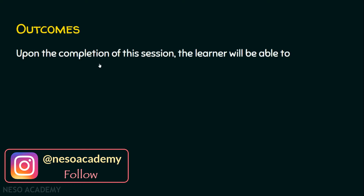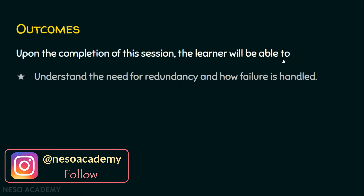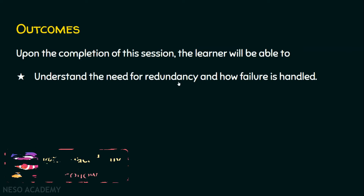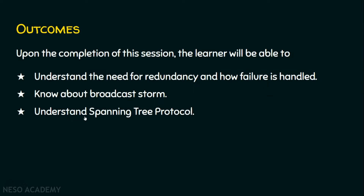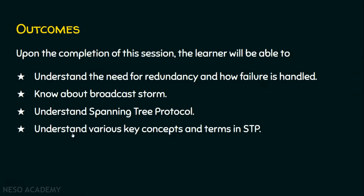Upon the completion of this session, the learner will be able to: Outcome one, understand the need for redundancy and how failure is handled. Outcome two, know about broadcast storm. Outcome three, understand the Spanning Tree Protocol. And the last outcome, understand various key concepts and terms in Spanning Tree Protocol.